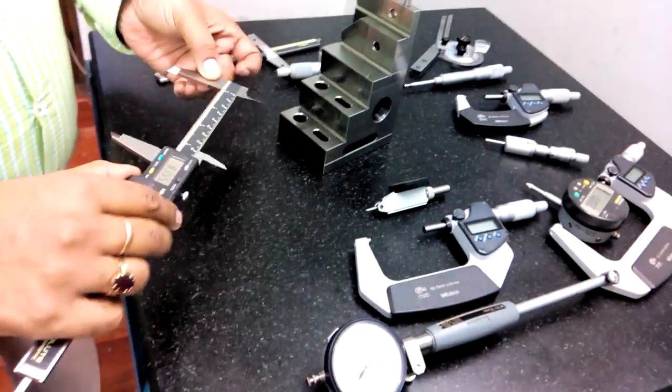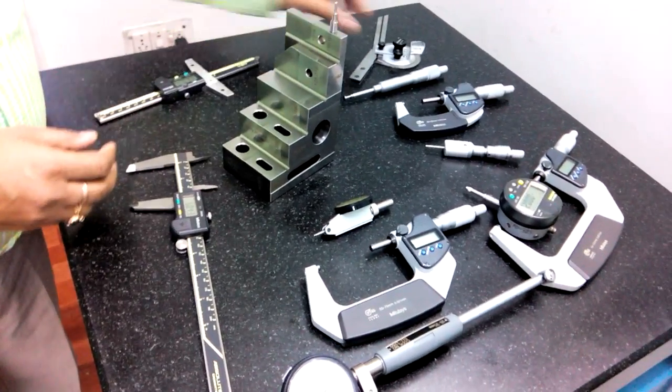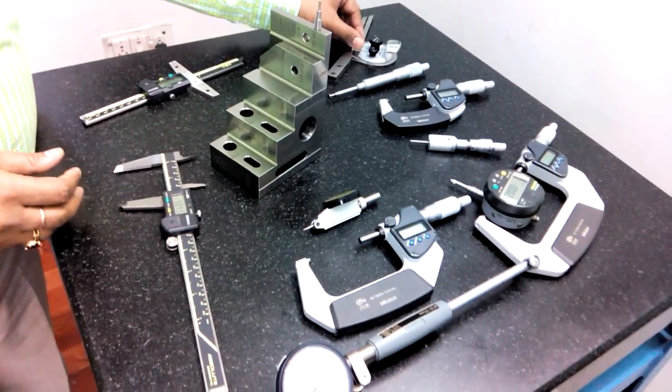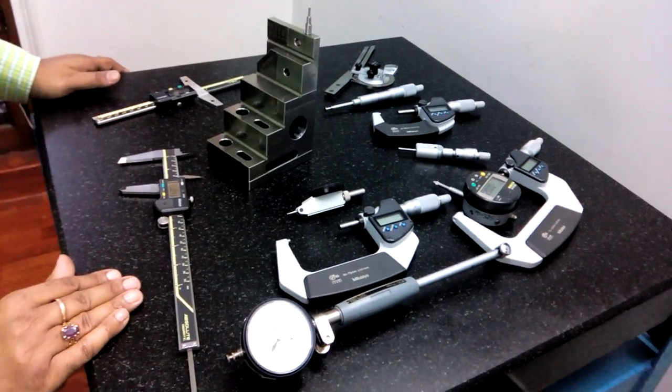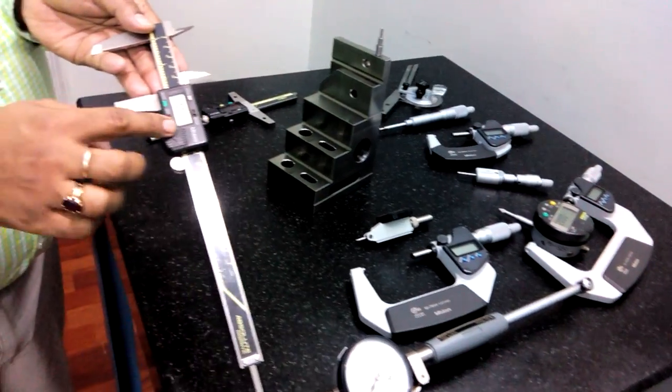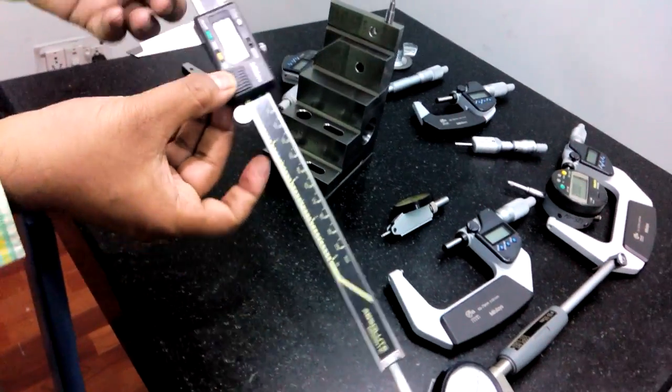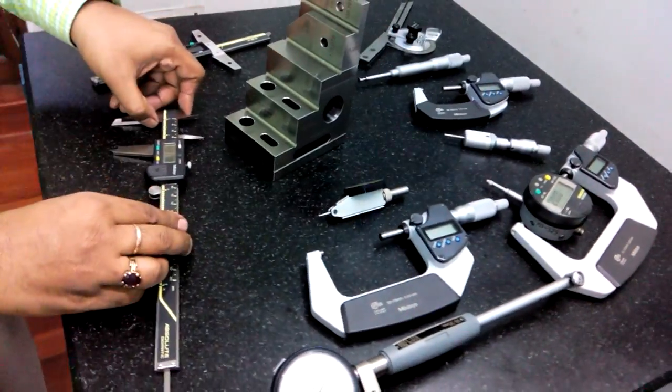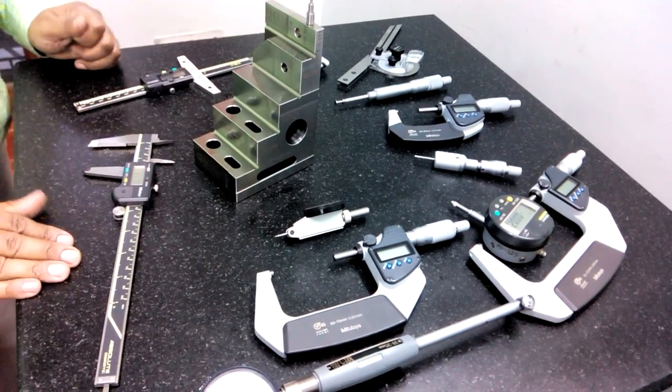Variable instruments like vernier caliper, micrometer, bevel protector, puppy dial, and plunger dial - all those instruments which give their output in a variable form. These kinds of instruments are called variable instruments, and Type A Quick Check is designed for them.